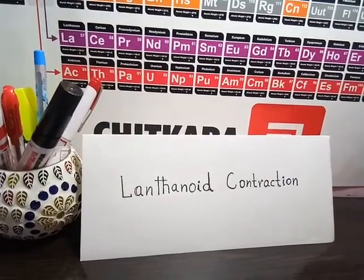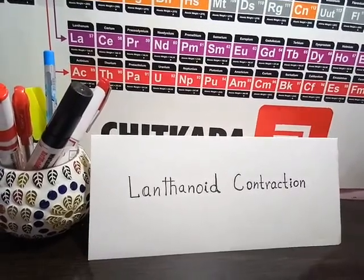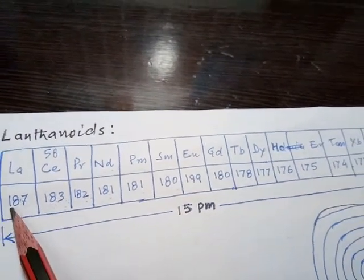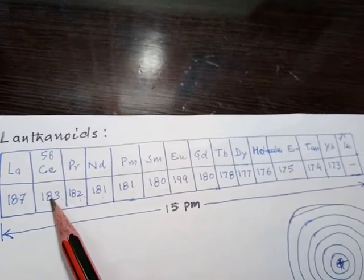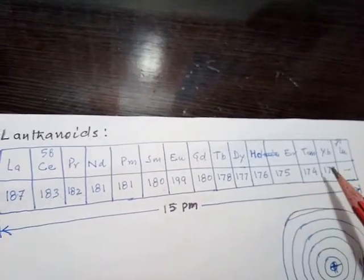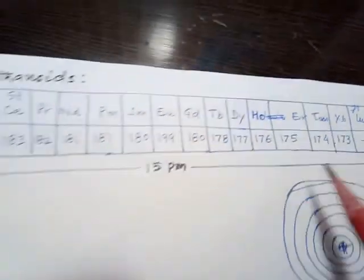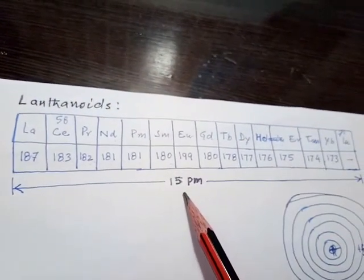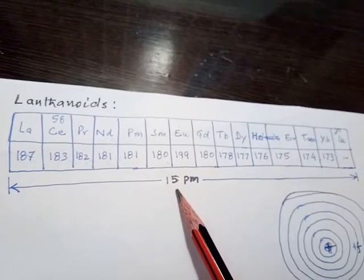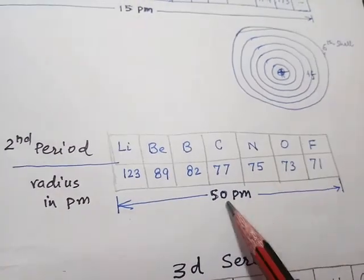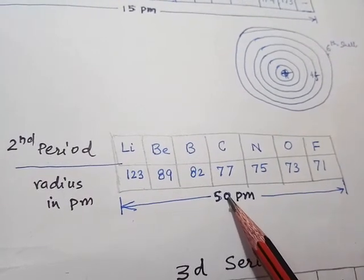In this video, we are going to explain the term lanthanoid contraction. Lanthanoid contraction refers to the decrease in atomic radii of lanthanoids. Cerium is 183 picometers and up to lutetium the atomic radii has decreased to 173 picometers. So between these 14 lanthanoid elements there is a decrease of only 15 picometers, in comparison to the second period from lithium to fluorine where between these seven elements the decrease is 50 picometers — that is much larger.